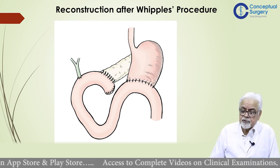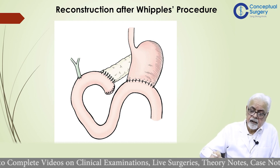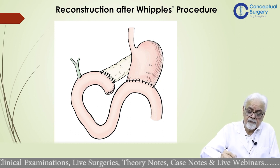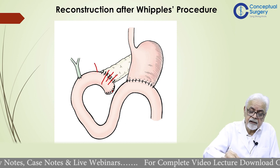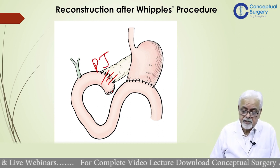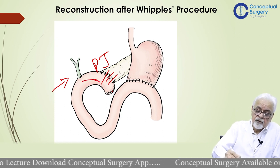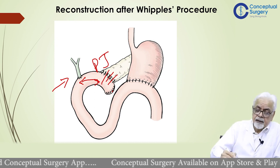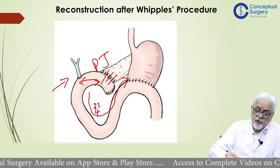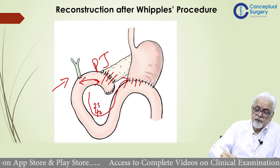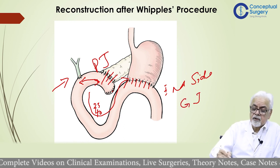This is the kind of reconstruction done after Whipple's procedure. The divided end of the jejunum is used for anastomosis — end to side or side to side depending on the approach. This is the pancreaticojejunal anastomosis, which could be a dunking anastomosis or a duct-to-duct anastomosis. Then this is the choledochojejunostomy, where the bile duct is anastomosed about 15 to 20 centimeters downstream, and then around 25 to 40 centimeters further downstream, we do an end-to-side gastrojejunostomy after partial gastrectomy.